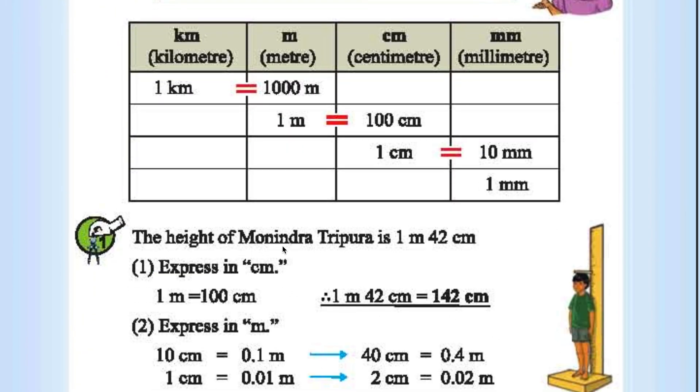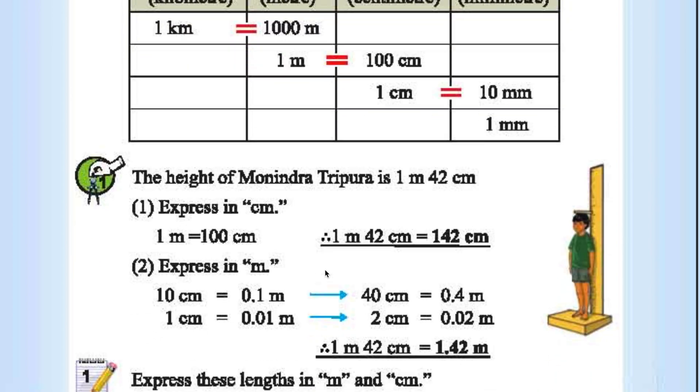The height of Monindra Tripura is 1 meter 42 centimeters. Now in centimeters it will be 142 centimeters. Why? Because 1 meter is 100 centimeters. 100 plus 42 is 142.